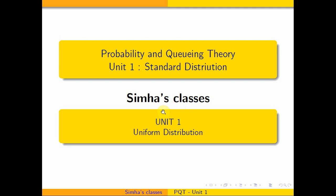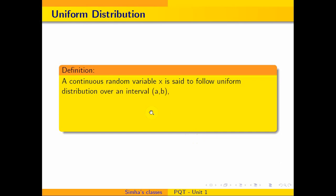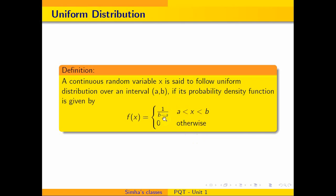Hi students, in this class we are going to discuss standard distributions and uniform distributions. In the uniform distribution, we will talk about the MGF, mean and variance. The definition: a continuous random variable x is said to follow uniform distribution over an interval a, b if its probability density function is given by f(x) = 1/(b−a), where a < x < b, and 0 otherwise. Another name for uniform distribution is rectangular distribution, because throughout the interval the value is going to be uniform.